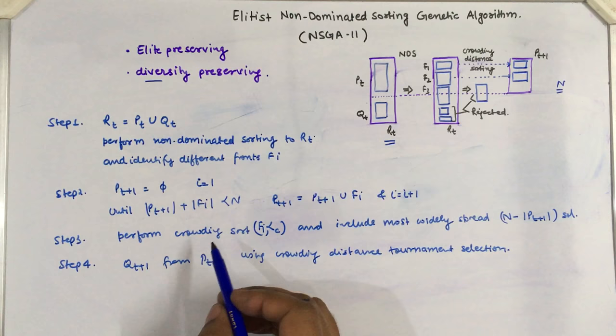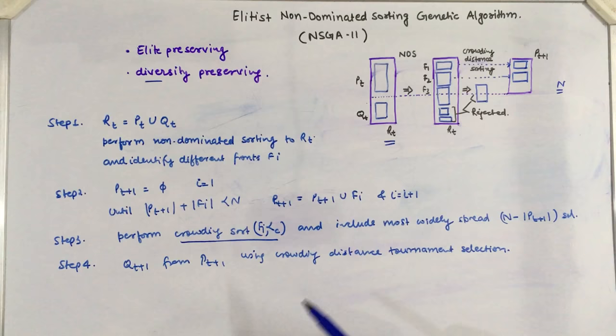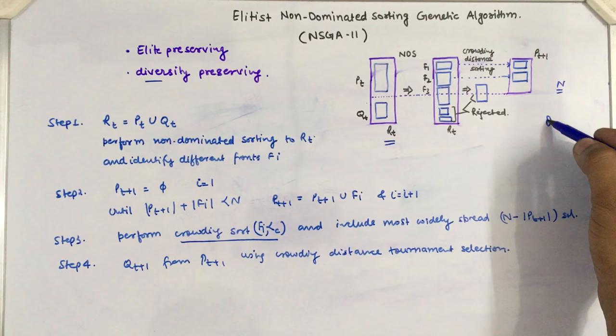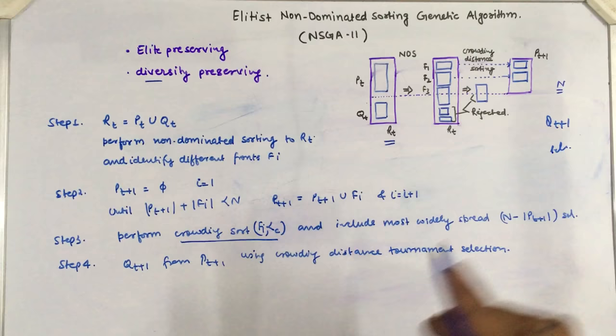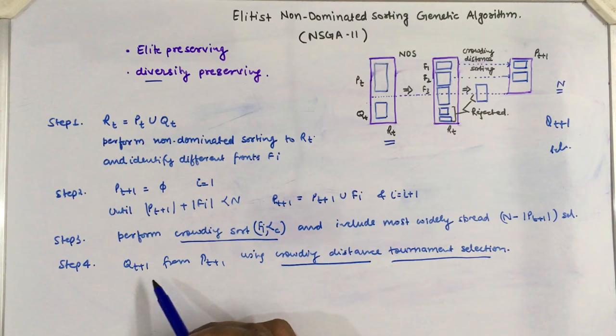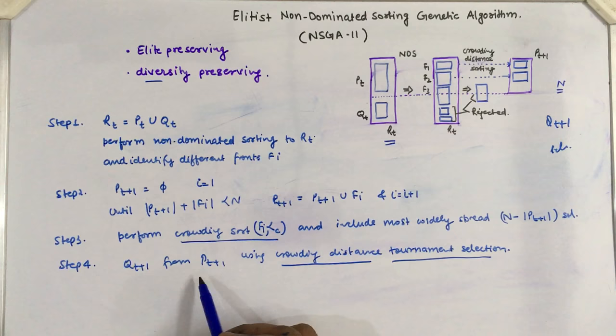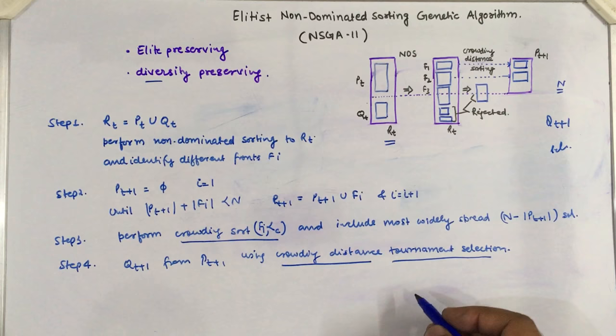After including all solutions and forming Pt+1, the next step is to form Qt+1 by applying the selection operator, which is the crowding distance tournament selection operator. Using this we form Qt+1, and then we apply mutation and crossover — similar to the original NSGA and standard genetic algorithm — on Qt+1 and Pt+1.